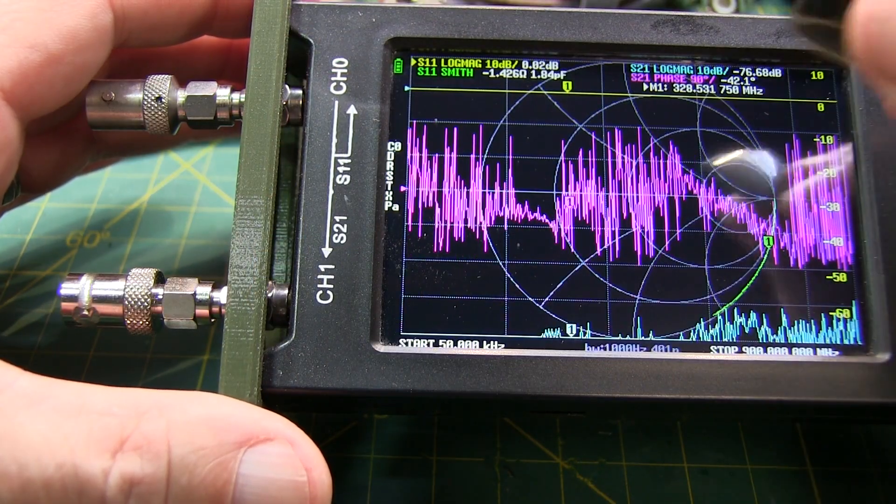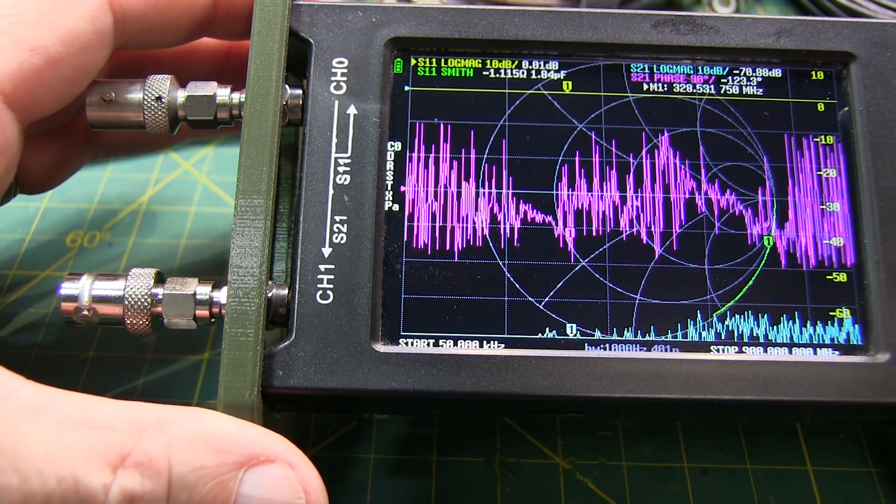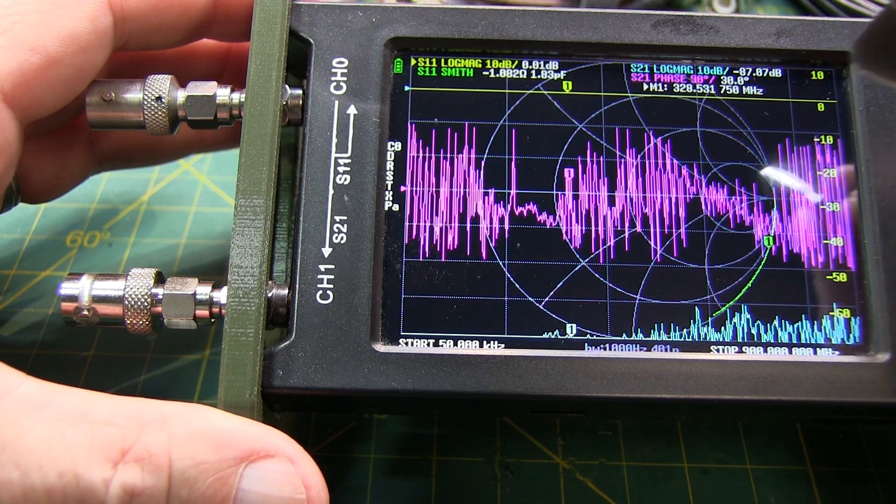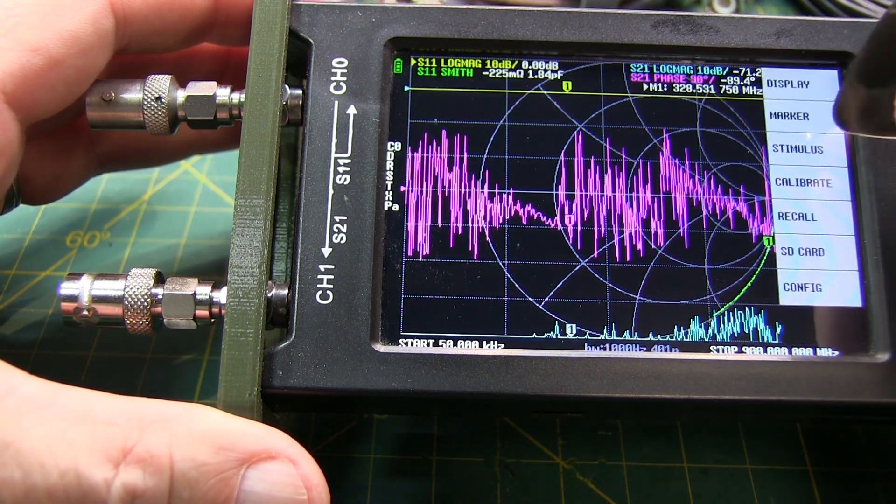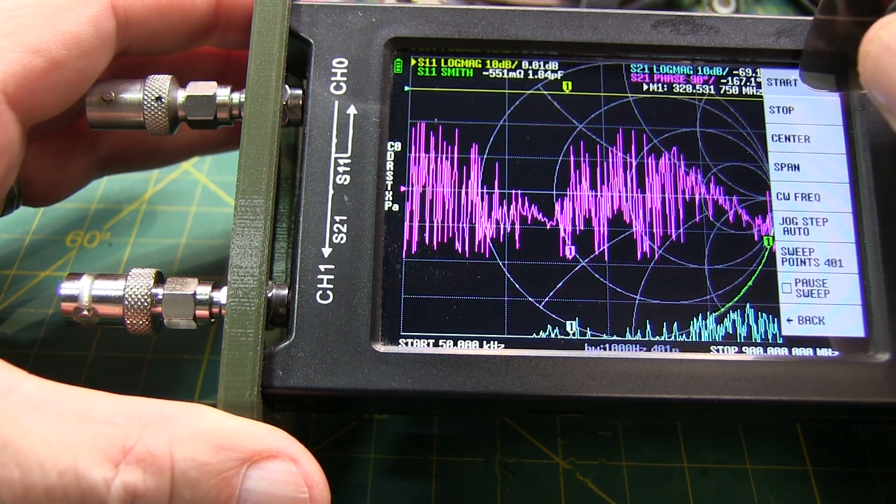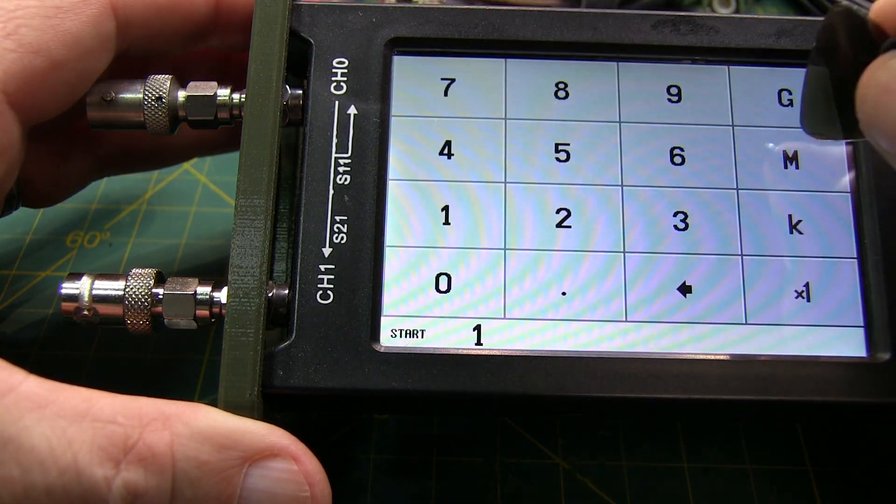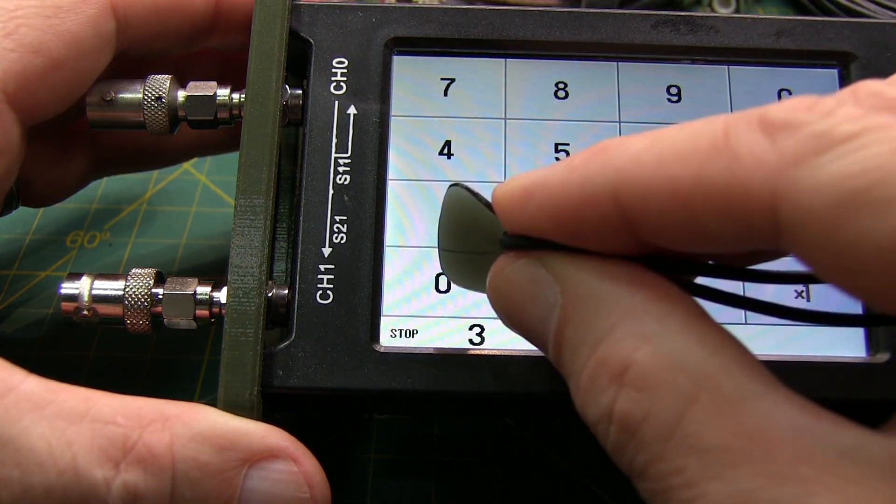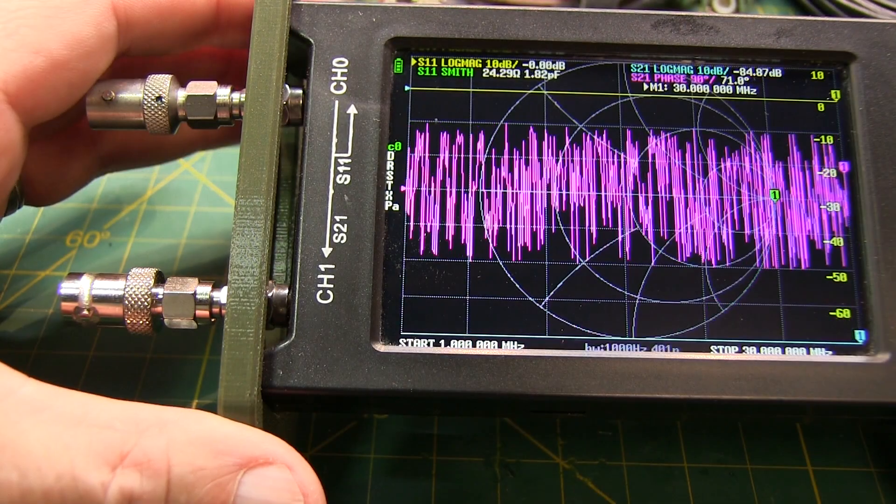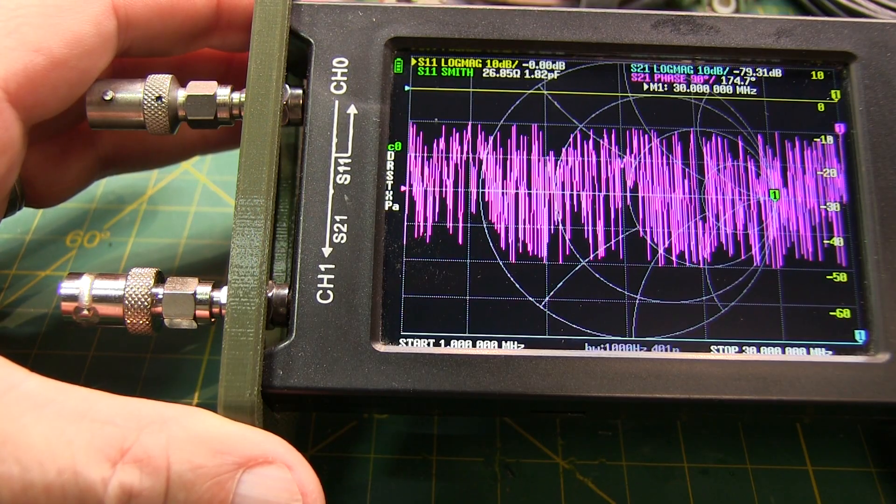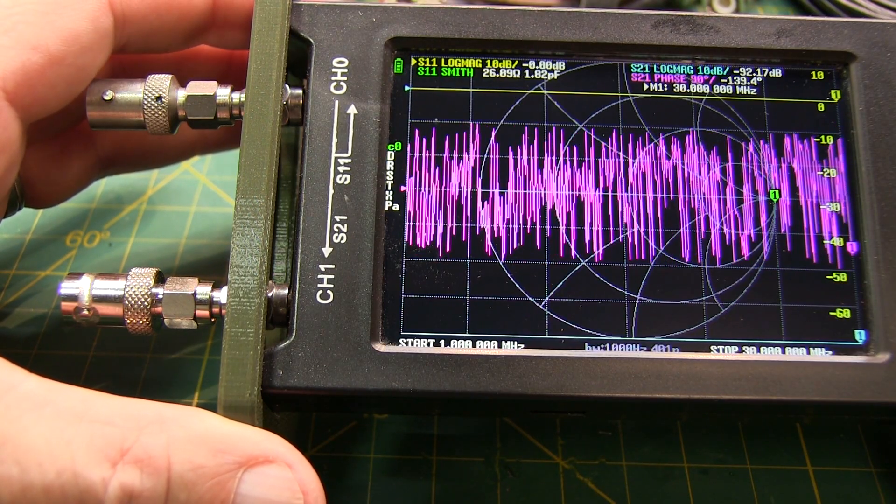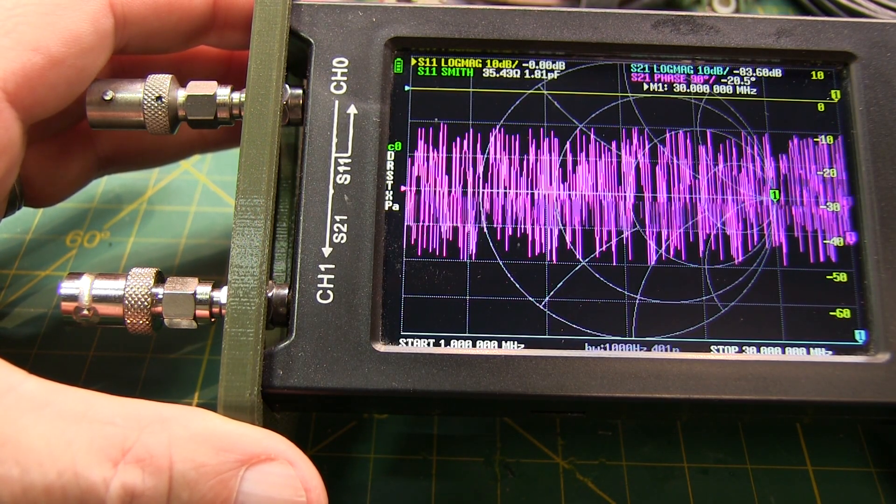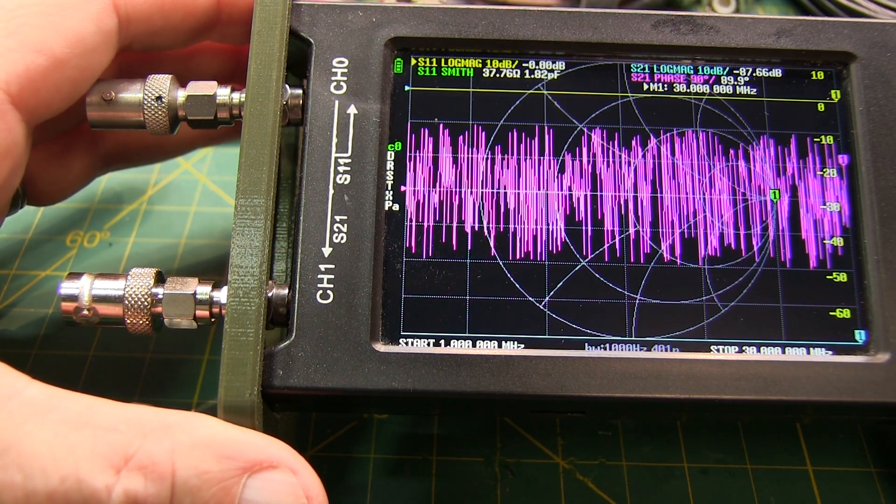So the first step is going to be to set up the frequency range that I want to do the testing over, and perform the calibration. So we'll start by going to stimulus, and setting the start frequency. In this case, I'm just going to start at 1 MHz, and we'll set the stop frequency at 30 MHz. This will cover the HF bands that I use most often when operating portable, which is usually just 40 MHz and 20 MHz, or 7 MHz and 14 MHz.